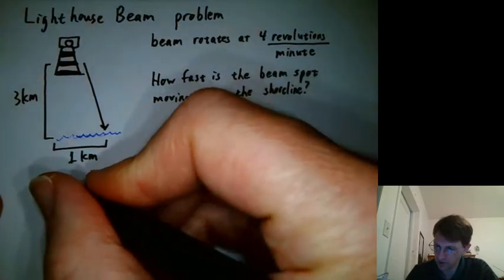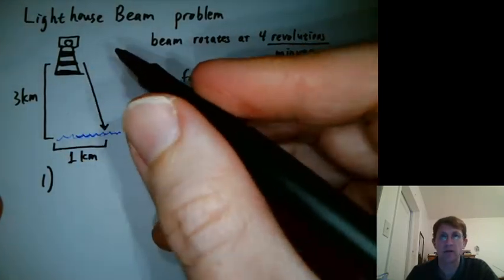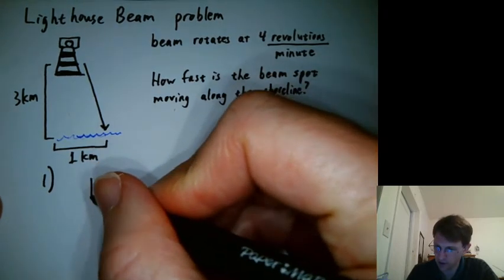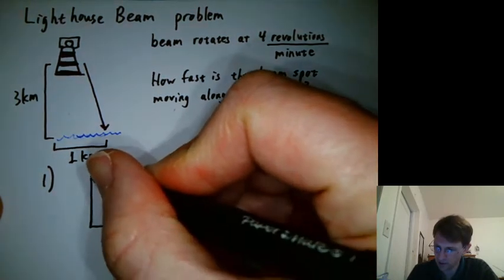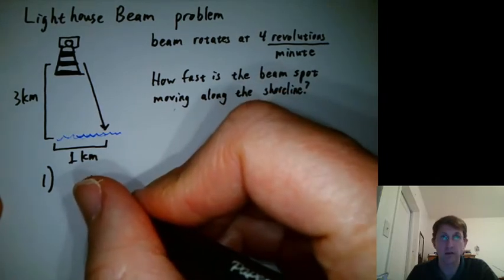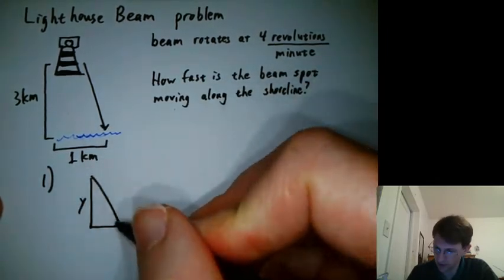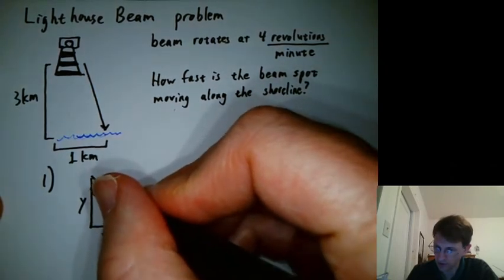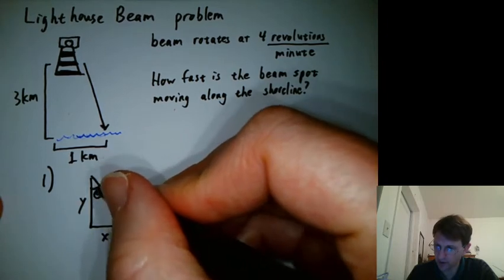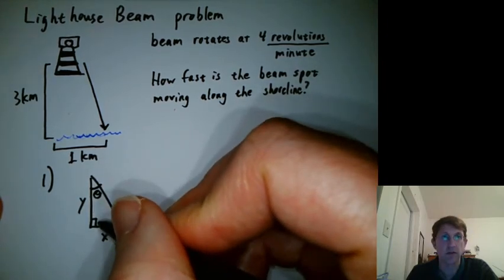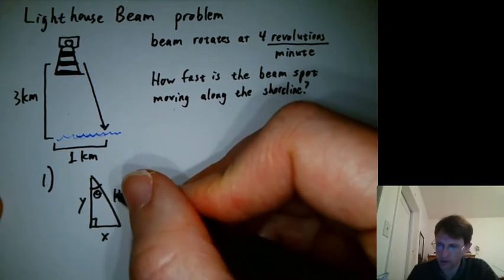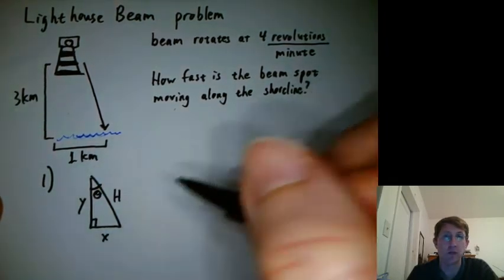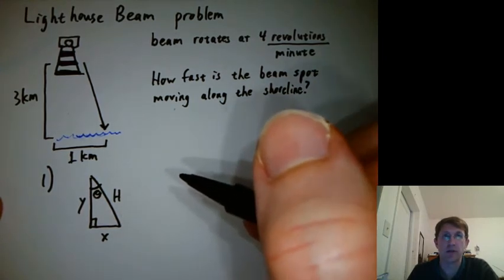So step one is draw a picture and make it mathematical. We have a picture with some math to it already, but we could change it a little bit. We've got, we could call this side y, we could call this side x. There's an angle thing going on here, so I'm going to call that angle theta. This is a right angle. We could also call this a hypotenuse h. It turns out we won't end up needing the length of the beam here, but as long as we're giving names to things, we could do that.